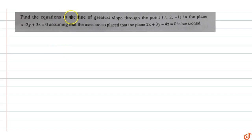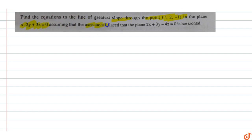In this question, find the equations of the line of greatest slope through the point (7, 2, -1) in the plane x minus 2y plus 3z equals zero, assuming that the axes are so placed that the plane 2x plus 3y minus 4z equals zero is horizontal.